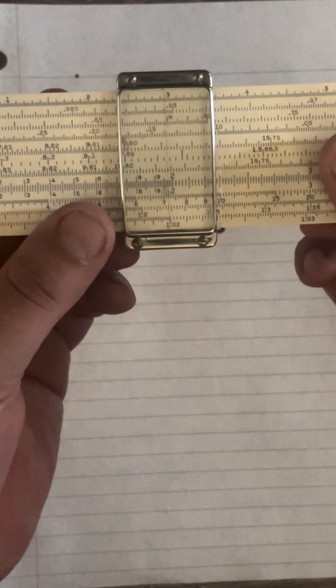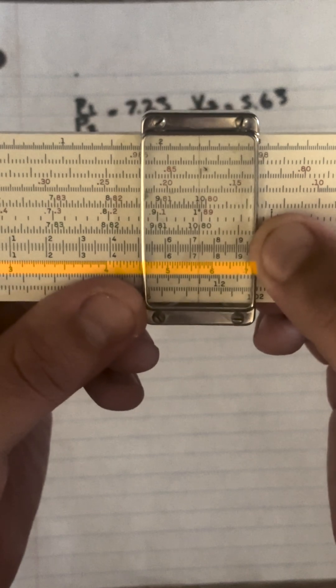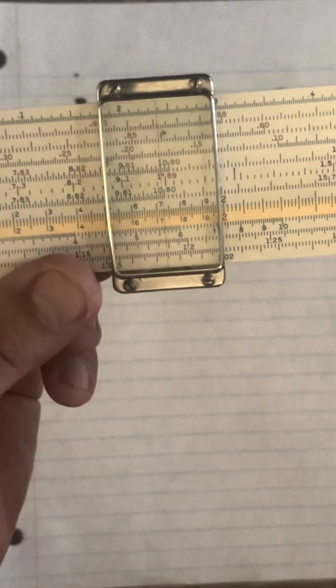We're going to find the log of 5.63 by setting the hairline to 5.63 on LL3. Down on LL3, 5.63, and if we look up on D, that's at 1.73. So let's remember that: 1.73.